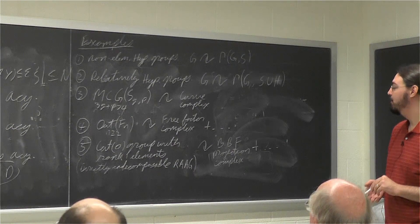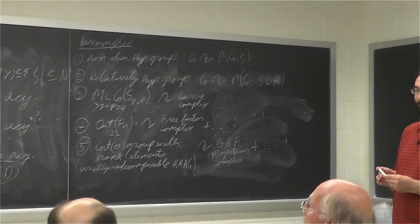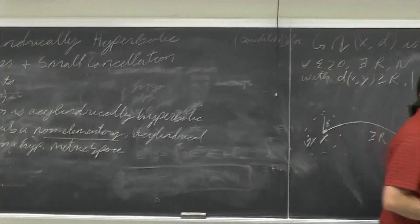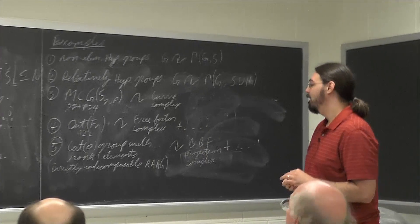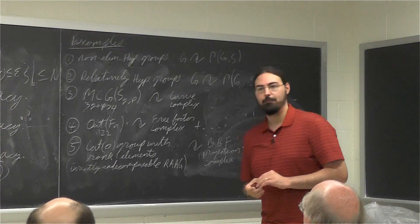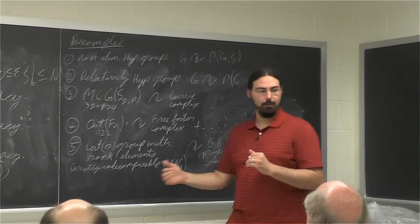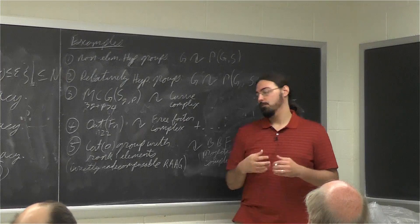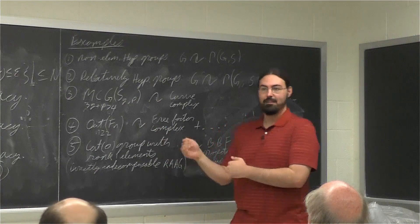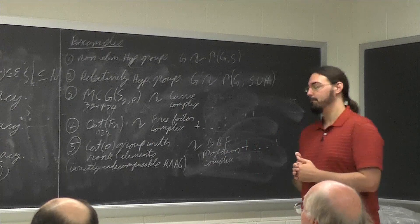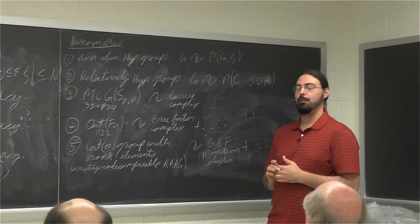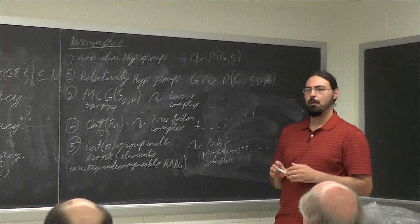There are other examples. Groups that split as amalgamated products or HNN extensions act on Bass-Serre trees. Osin and Minasyan analyzed what you need from such an action to guarantee the WPD condition — for example, all one-relator groups with at least three generators are always acylindrically hyperbolic. They get many three-manifold groups and other interesting examples. This is a fairly large class of groups.